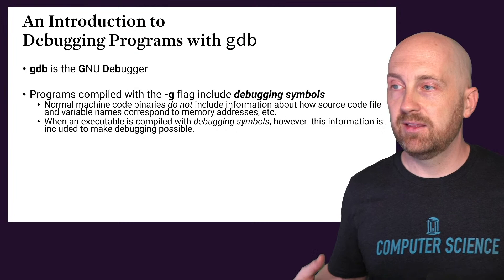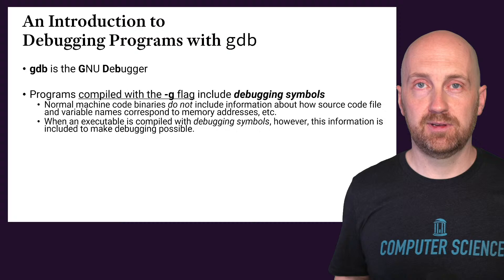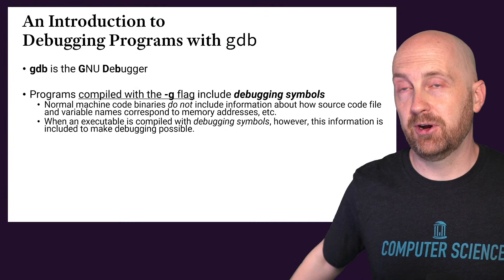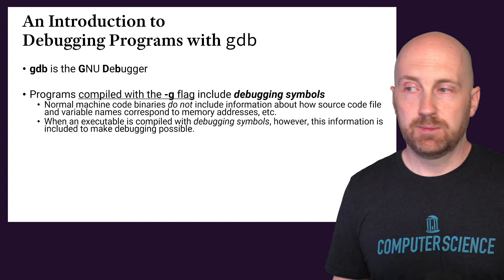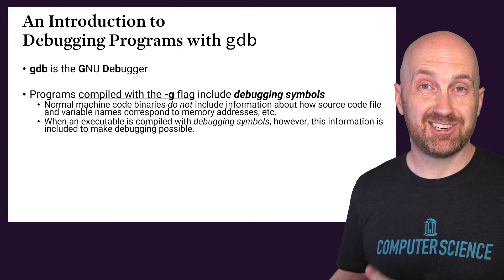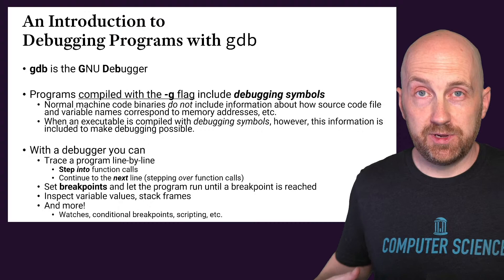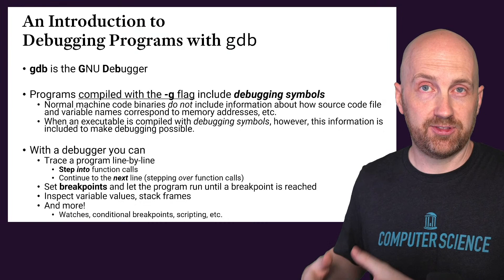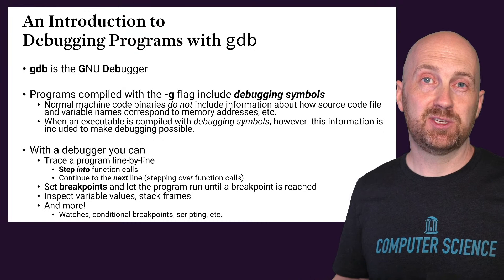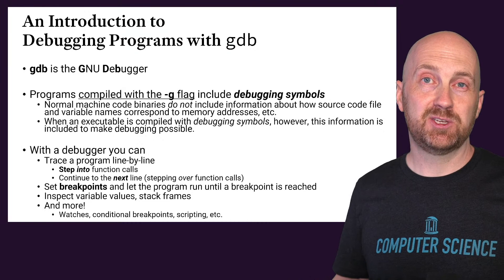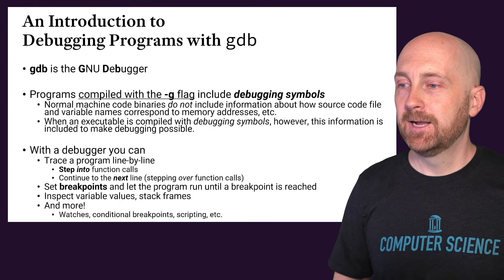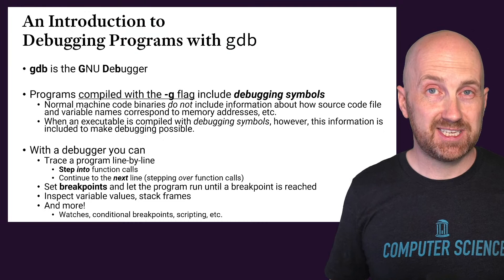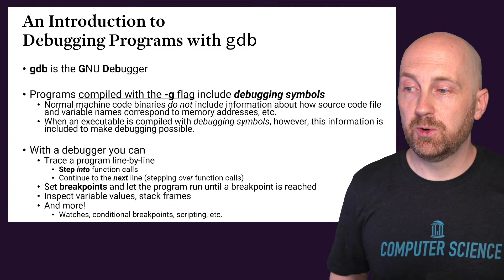GDB is the GNU debugger. Once we've started a debugger hooked up to a running program, we can do things like step line by line, set breakpoints — so we say "at line 53, pause the program, but until then run as fast as you can" — see current values of variables, what stack frames we're in, and there are cool things we can do with watches and conditional breakpoints.